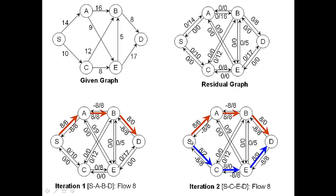Now find a new path. You can send from S, C, E, D. The available capacities on this path are 10 on this edge, 8 on this edge, and 17 on this edge. You can send only 8 units of flow, which saturates the edge C to E. So C to E has flow 8 and available capacity 0, with back edge negative 8, 8. On S to C, the flow is now 8 and available capacity is 2 (10 minus 8), with back edge negative 8, 8. On E to D, flow increases to 8 and available capacity decreases from 17 to 9, with back edge negative 8, 8.